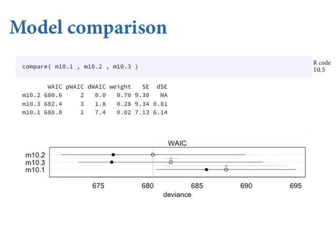Let's do the model comparison. Three quarters of the weight is getting assigned to model 10.2, which does substantially better than 10.3. The standard error is actually pretty small, and if you double it, it still barely overlaps the other. So 10.2 is pretty much better and the interaction doesn't really help prediction here, given these data and these models.